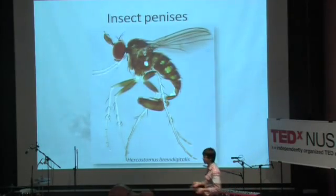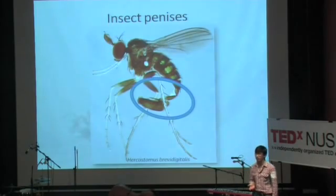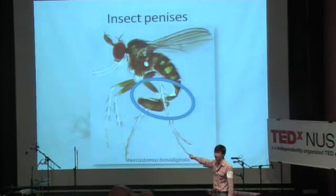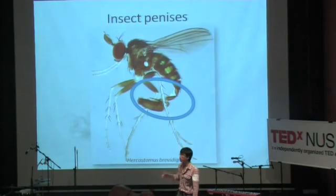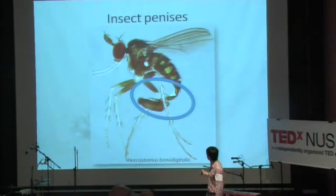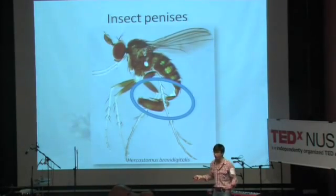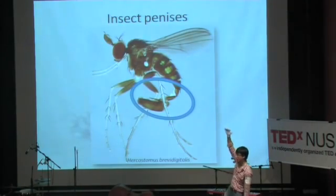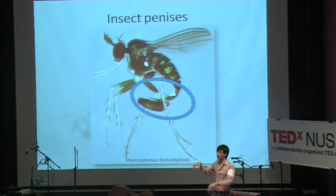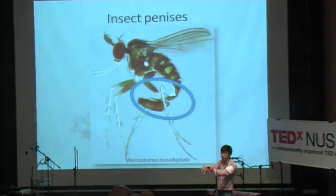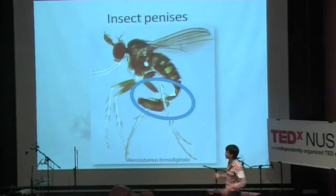While we're on the topic of penises — here is the penis of an insect from a local fly fauna in Singapore. About two years ago we had a large study looking at insects found in the mangroves of Singapore, and this is one of the species found there. If you look here, the penis of the fly is actually just as large as the abdomen. The female is running around on the mud looking for grubs to eat, and then suddenly this male fly comes down, picks her up with his penis, and flies off. This is why it's so big.